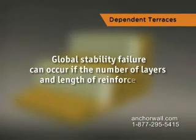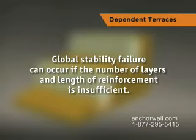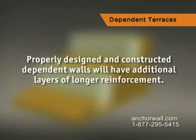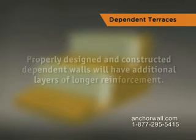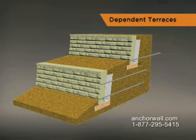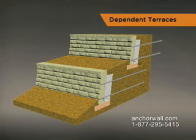Global stability failure can occur if the number of layers and length of reinforcement is not sufficient. Properly designed and constructed dependent walls will have additional layers of longer reinforcement. The additional reinforcement pushes the global stability failure plane deeper into the soil mass, making global stability failure less likely to occur.